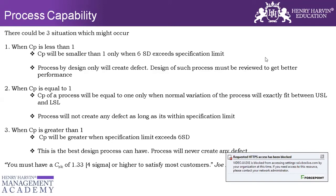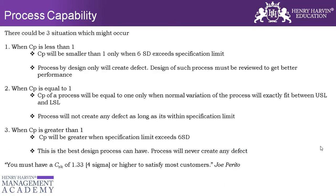For example, when we are developing something in the service industry — maybe some automation — we also look into the load, how much load, and the exception handling. We keep all those features in effect so that in future, if anything exceeds the normal, our product is able to handle that kind of situation. That can be an example where CP is greater than one.